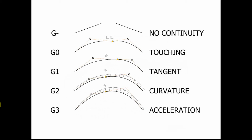G1 is when you have tangent continuity. You can see here on the G0 continuity, you're sharing a co-point condition but the slopes are different. When you've got G1 continuity or tangent continuity, you have a co-point condition plus the slopes of the curves are the same at that point.